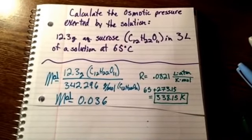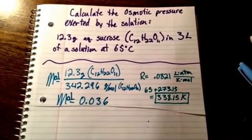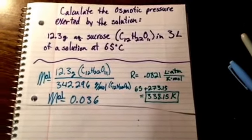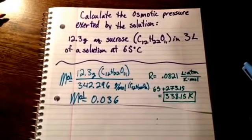Calculate the osmotic pressure exerted by the solution: 12.3 grams of aqueous sucrose, C12H22O11, in 3 liters of a solution at 65 degrees Celsius.